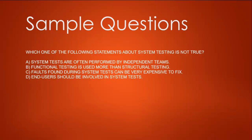Now the second question: Which one of the following statements about system testing is NOT true? A) System tests are often performed by independent teams. B) Functional testing is used more than structural testing. C) Faults found during system tests can be very expensive to fix. D) End users should be involved in system tests.